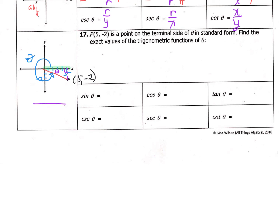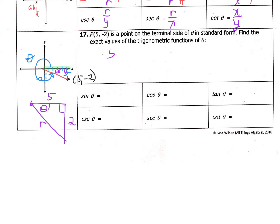So this is theta prime. If this direction from here to here is five, then that means this direction is five — because this is our origin. When we went down two, this has a value of two. And then this is our radius r, which we need to find. So over here, I'm going to do the Pythagorean theorem: five squared plus two squared equals r squared. So we have 25 plus 4 equals r squared, and then r squared equals 29.